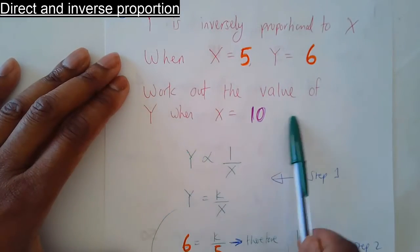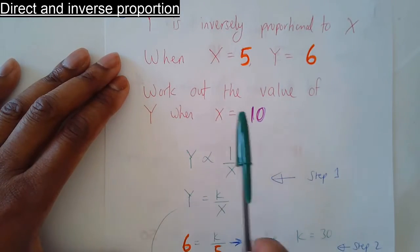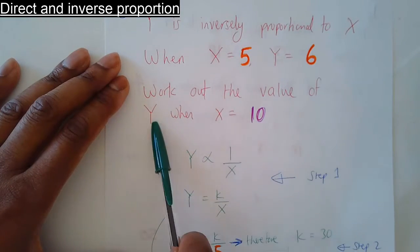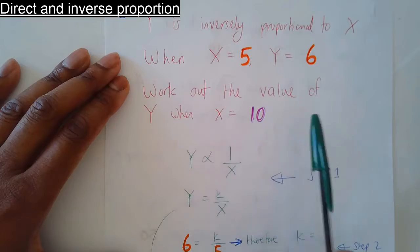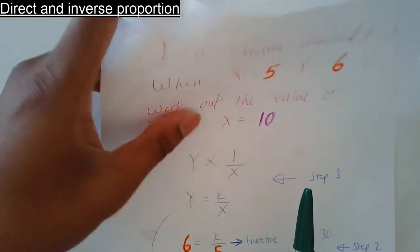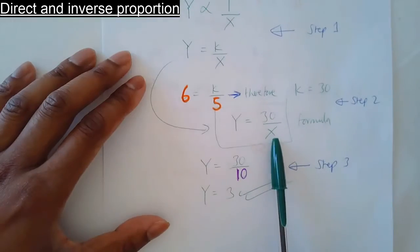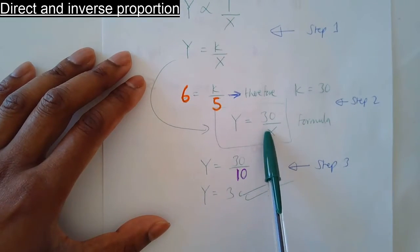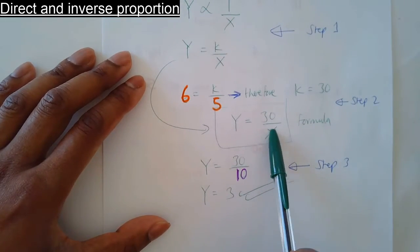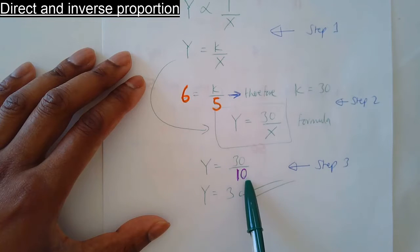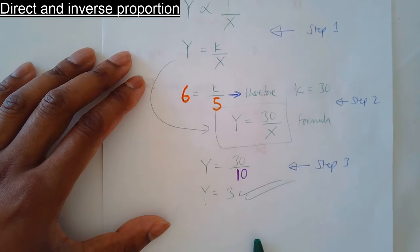This part of the question asks: find the value of y when x equals 10. When x is 10, replace the x with 10 in the formula: 30 divided by 10 is 3. That's the answer.